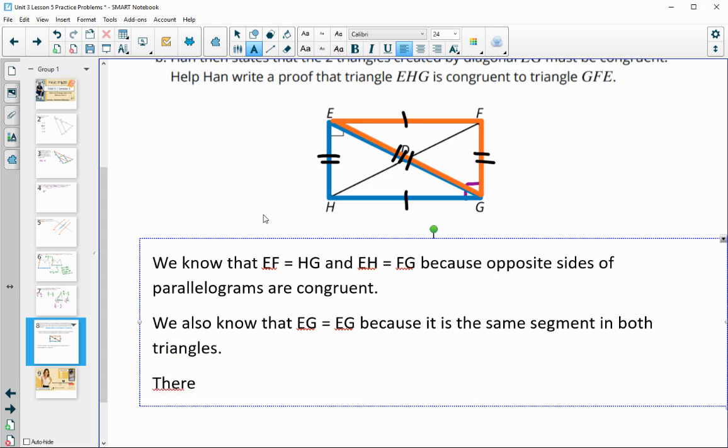And then therefore triangle EHG is congruent to triangle GFE by side, side, side. And then angle congruence.